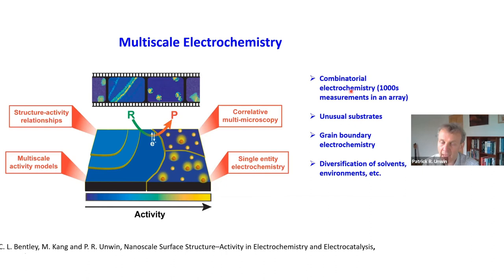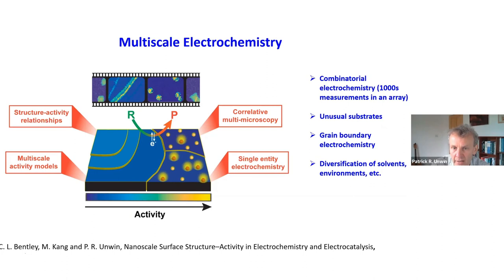This is not just an imaging technique — each spot can have a different electrochemical measurement, or you can have a graded sample with many different materials. It's a beautiful platform for combinatorial electrochemistry, making thousands of measurements in an array. You can look at unusual substrates like TEM grids, do direct grain boundary electrochemistry, and diversify the range of solvents and environments. We can also do SICM for charge mapping and visualizing ion fluxes. We're really well set for using this technique for materials characterization.